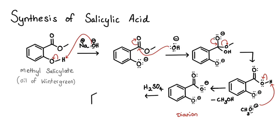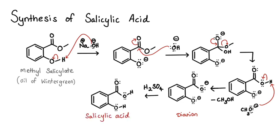After this, you would add sulfuric acid. In the laboratory, you are adding 8 molar sulfuric acid, which will be enough to protonate both oxygens — both oxide anions. So you will get protons on both oxygens. This is the final product of the first step — not the aspirin final product, but the product of the synthesis of salicylic acid.